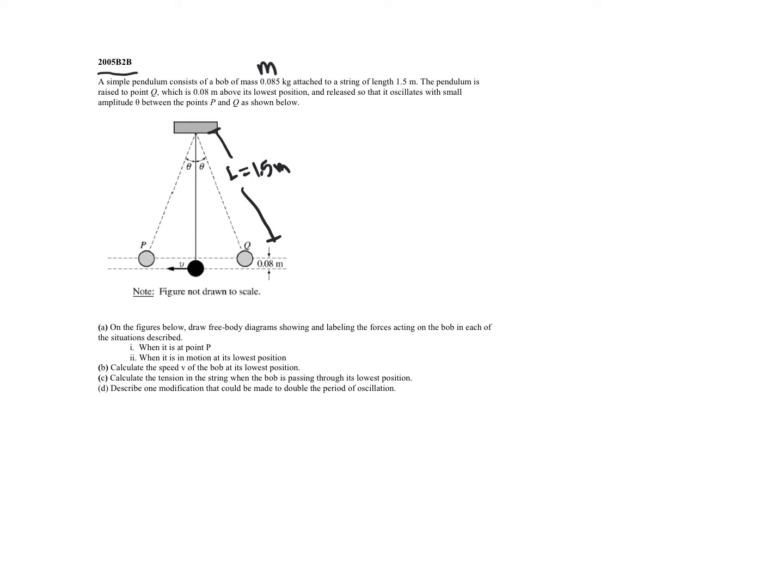The pendulum is raised to point Q, which is 0.8 meters above its lowest point. So that would be our height component. And it is released so that it oscillates with a small amplitude. So this is our angular displacement as shown below.